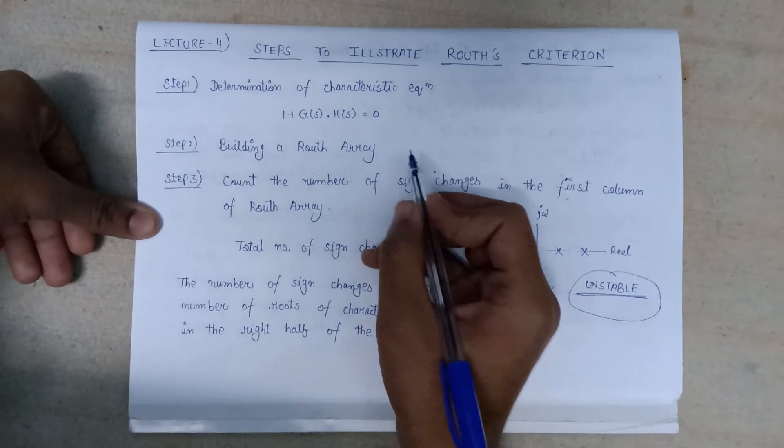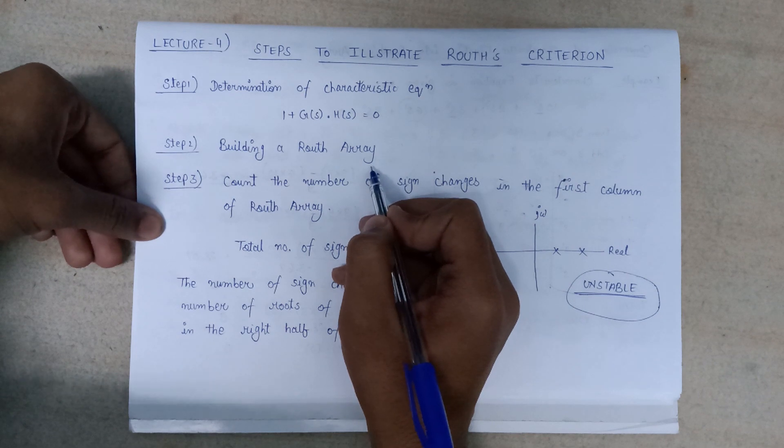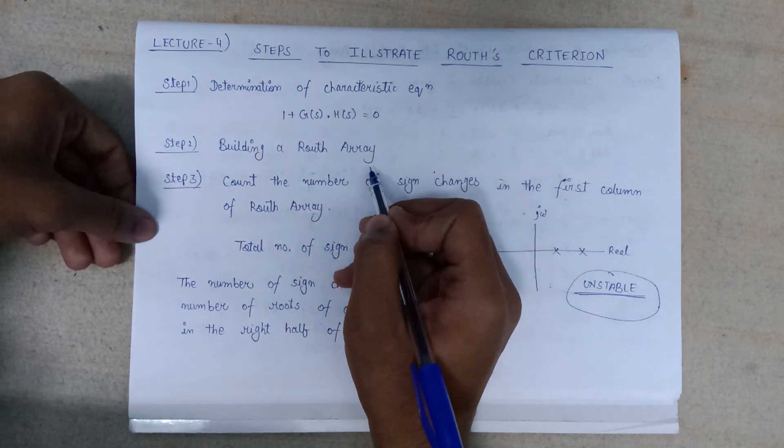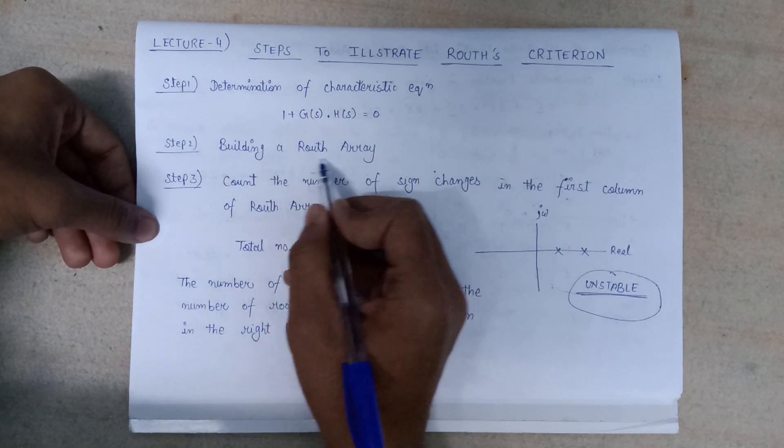After the determination of the characteristic equation, we have to form a Routh array that we discussed in our previous video. Refer that video and try to build a Routh array.